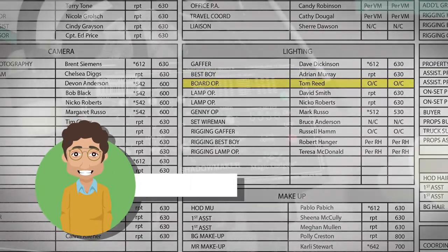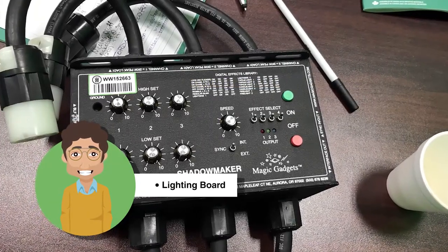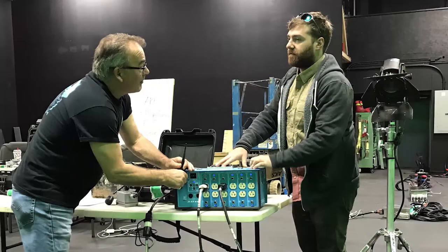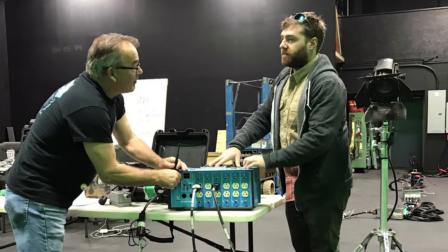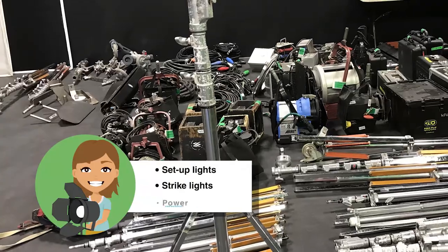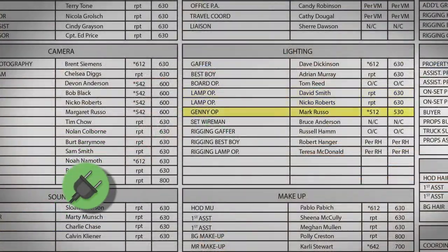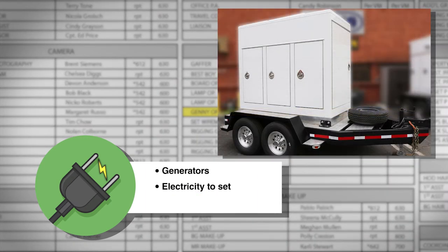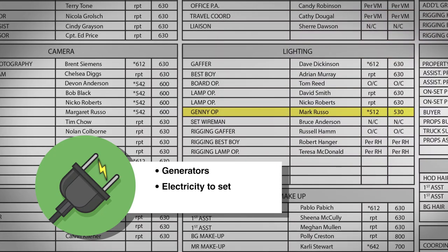The lighting board operator is in charge of running the lighting board, which can be conventional or automated. The lamp operators are also called lighting technicians or electrics. They make up the lighting crew that are in charge of setting up and striking the lights and the temporary power distribution on set. The GENIOP is short for the generator operator, responsible for running, maintaining, and operating the generators, and balances the electricity load going to set. The GENIOP is usually one of the first persons to arrive on set, making sure there is power for departments that work before call time.